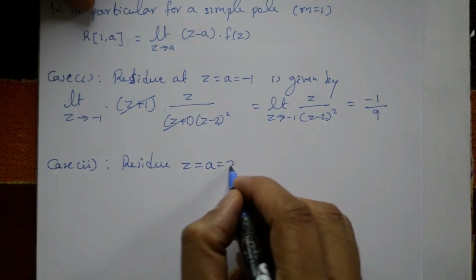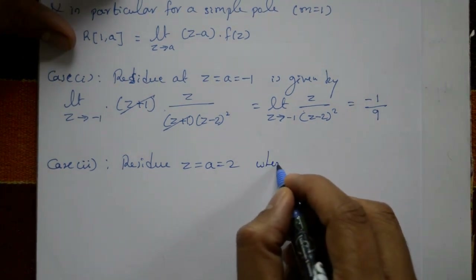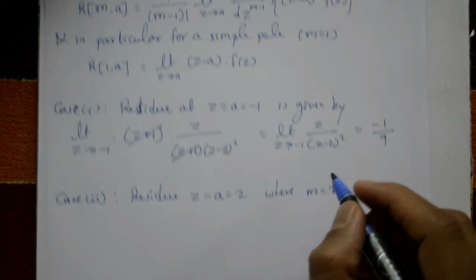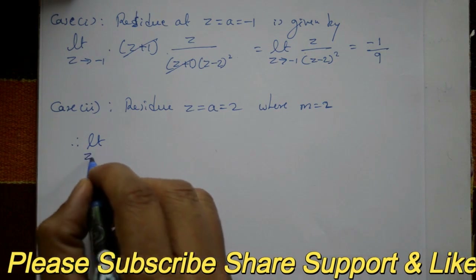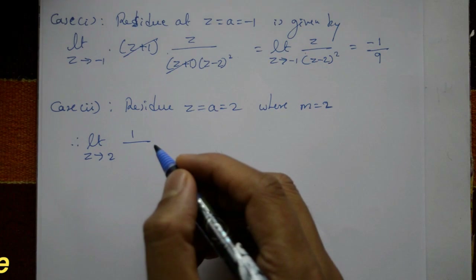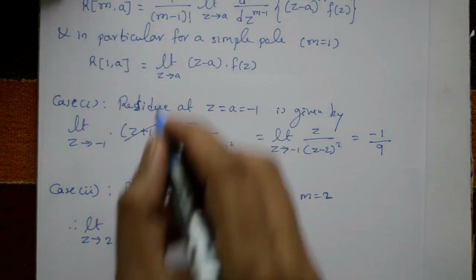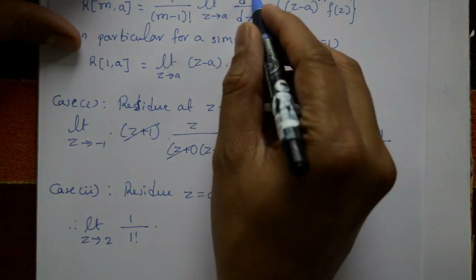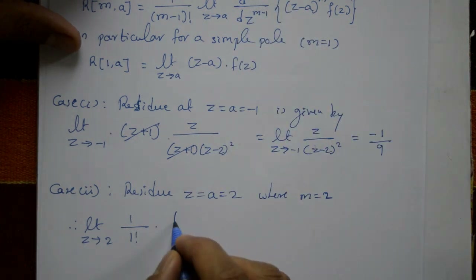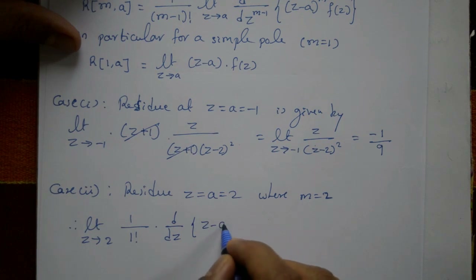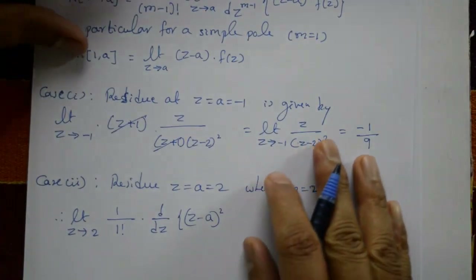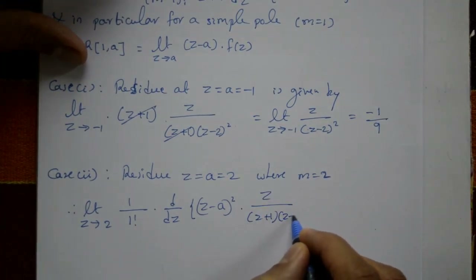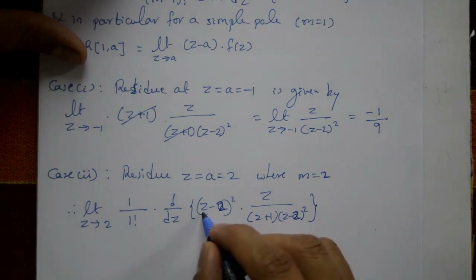Case 2: Residue at z = a = 2, where m = 2. Using the formula with m = 2: [1/(2-1)!] × d/dz [(z-2)² × f(z)] evaluated at z → 2. Substituting f(z) = z / [(z+1)(z-2)²], the (z-2)² terms cancel, leaving: (1/1!) × d/dz [z / (z+1)] evaluated at z → 2.